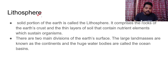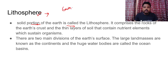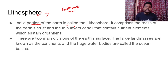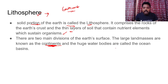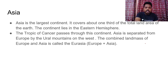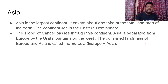Lithosphere is the solid portion of the earth — it is a mechanical differentiation term. In layman terms we use 'earth crust,' but technically it is the topmost layer of the crust plus some portions of the upper mantle. The lithosphere comprises solid rocks and thin layers of soil that contain nutrient elements which sustain organisms. There are two divisions: continental lithosphere and oceanic lithosphere.